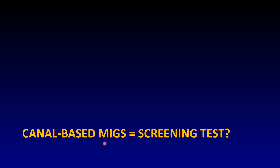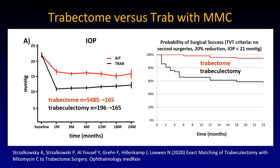The Trabex is a newer device similar to the Kahook Dual Blade except it has irrigation and aspiration. Why can't we use these MIGS as a screening test if we lack a clinical screening test? Is it such a big deal to just give it a try? I think it's up to the patient to decide — having eye surgery is never fun even if minimally invasive, and there are significant differences between ab interno and ab externo procedures. Trabeculectomy is still king in lowering pressure.